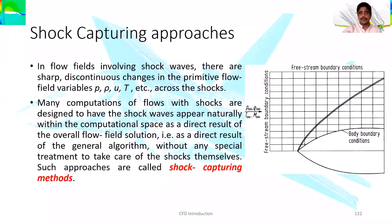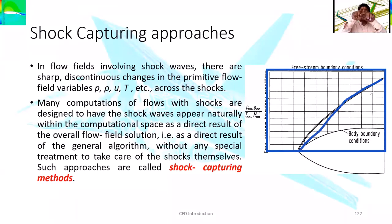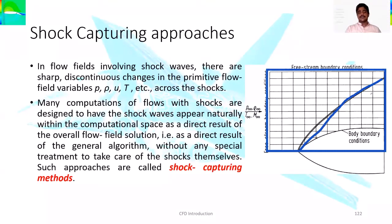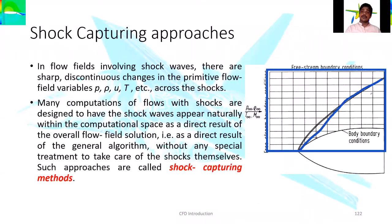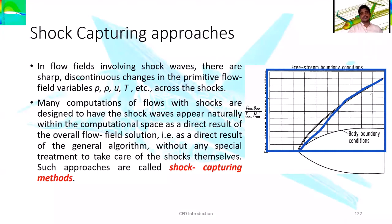In the shock capturing approach, the free stream boundary conditions are set in such a way that the shock should be available inside this domain only. The shock wave is a thin region in the fluid flow where the flow properties will vary all of a sudden in front of and behind the shock. Shock waves can occur above a Mach number of 1, or more than 0.7 Mach number, in supersonic flows.